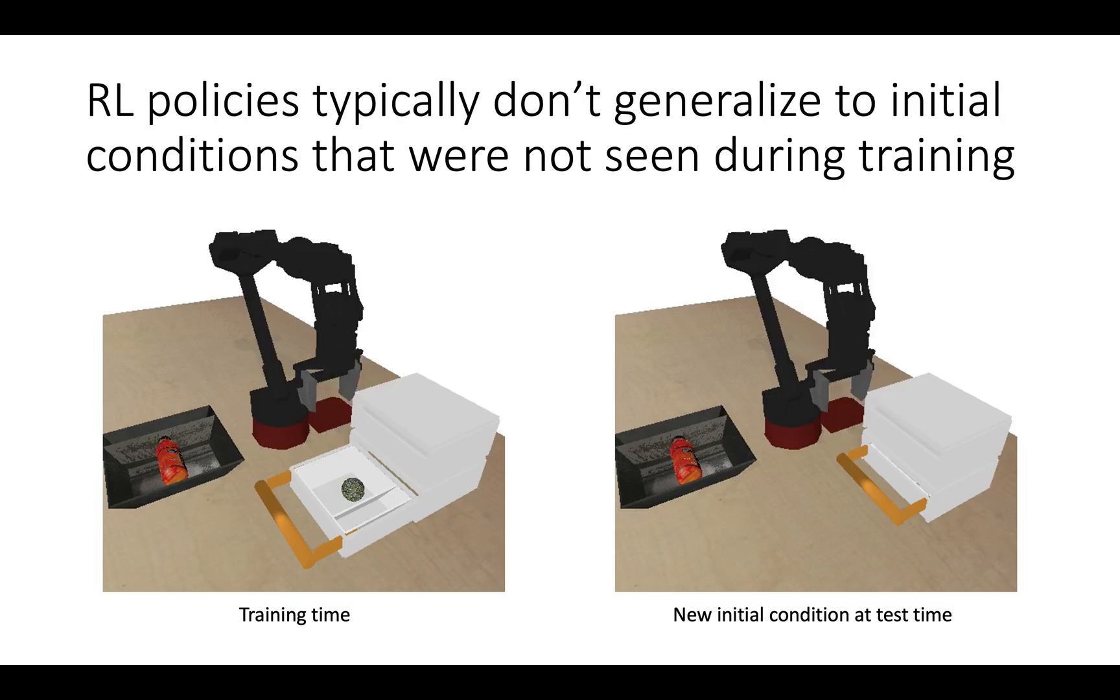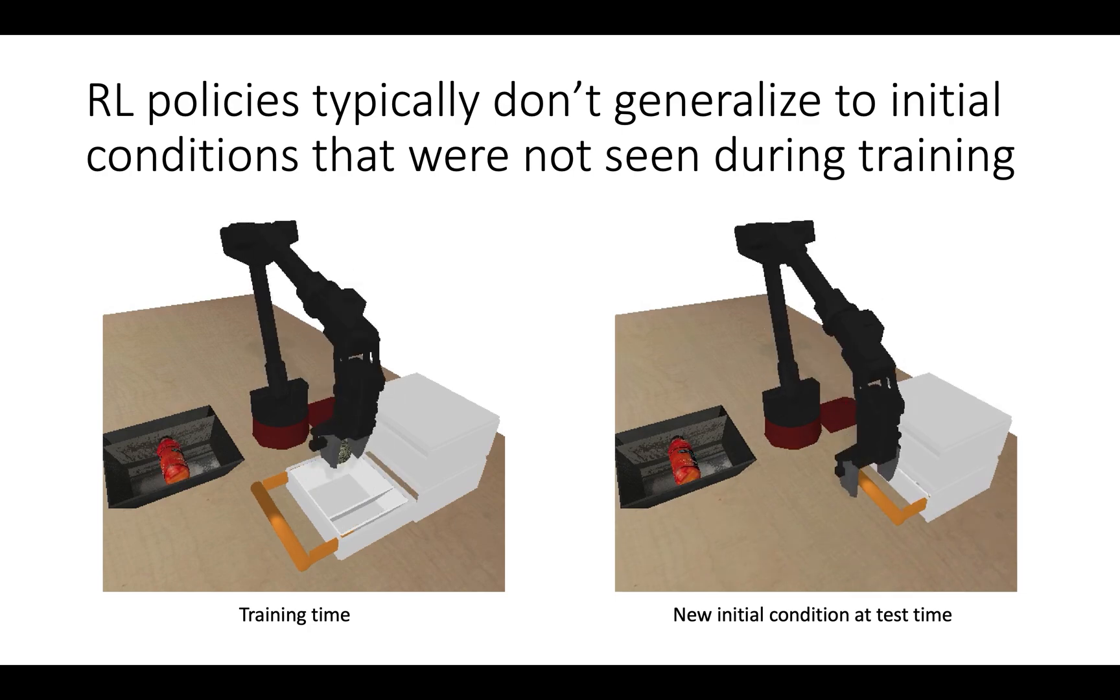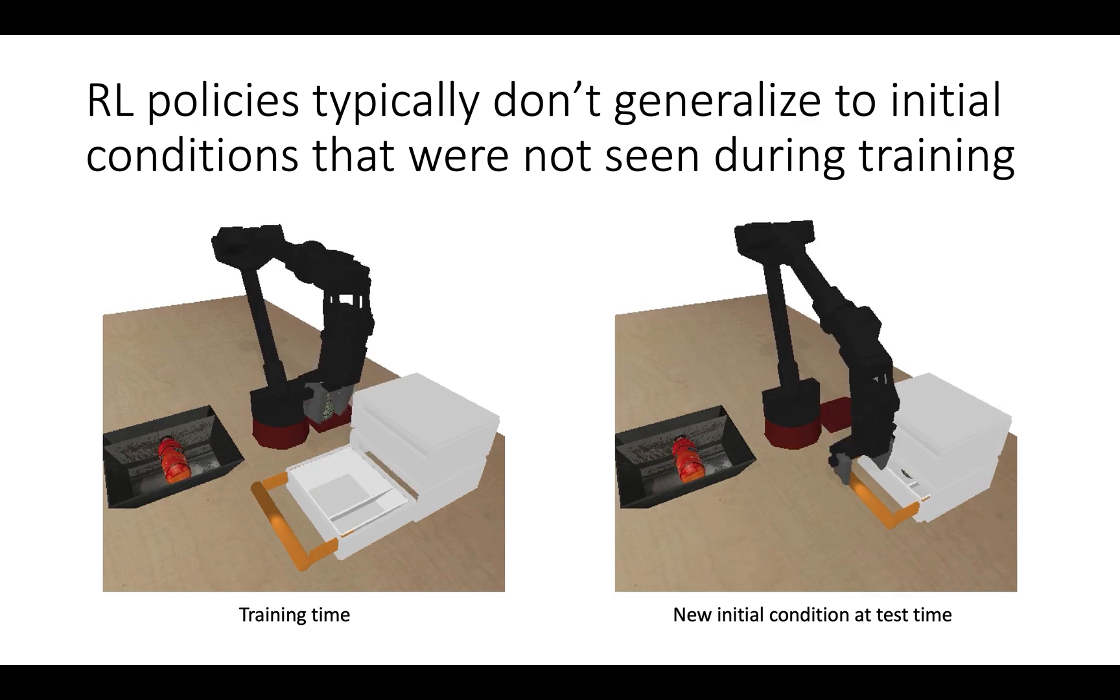Consider a robot that has been trained using reinforcement learning to take an object out of an open drawer. It learns to grasp the object and pull it out. If the robot is then placed in a scene where the drawer is instead closed, it will likely fail to take the object out since it has not seen the scenario or initial condition before.